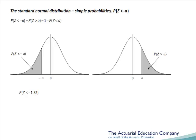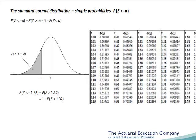Let's apply this to an example. Suppose we want to calculate the probability that z is less than minus 1.32. First we'll use symmetry, so this will be equivalent to the probability that z is greater than 1.32. Now we'll use the method for calculating greater than probabilities, so this will equal 1 minus the probability that z is less than 1.32. Looking at our probability tables, here's 1.32 and the probability is 0.90658. Subtracting this from 1, we get the answer of 0.09342. An easy way to remember this symmetry result, other than drawing the diagram, is to note that we swap the sign of the inequality from less than to more than, and we swap the sign of the number from negative to positive — in short, we swap the sign and we swap the sign.